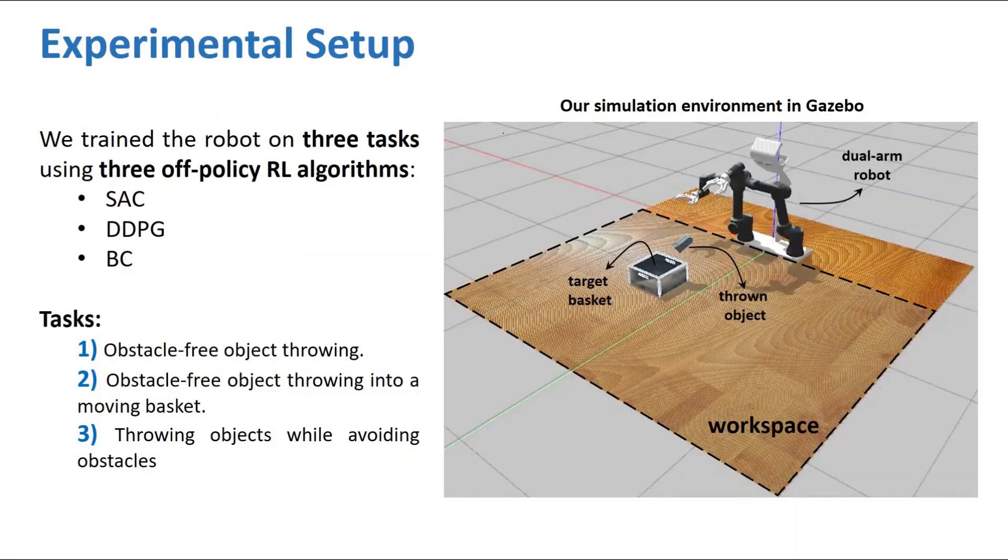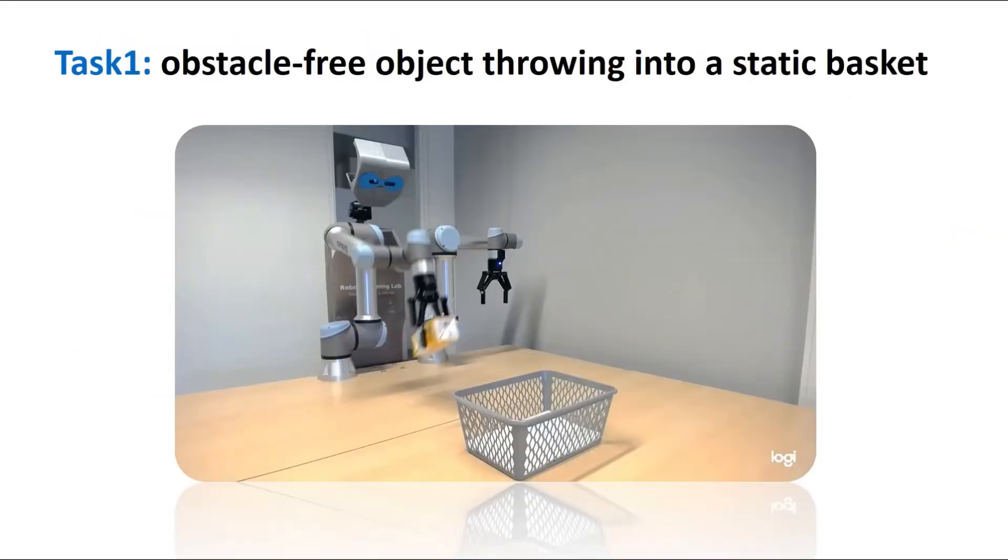We train the robot on three tasks using three off-policy reinforcement learning algorithms. Because of the low sim-to-real gap in Gazebo, we built our simulation environment in Gazebo. Task 1 is about obstacle-free object throwing into a static basket, where the basket is randomly placed in front of the robot.